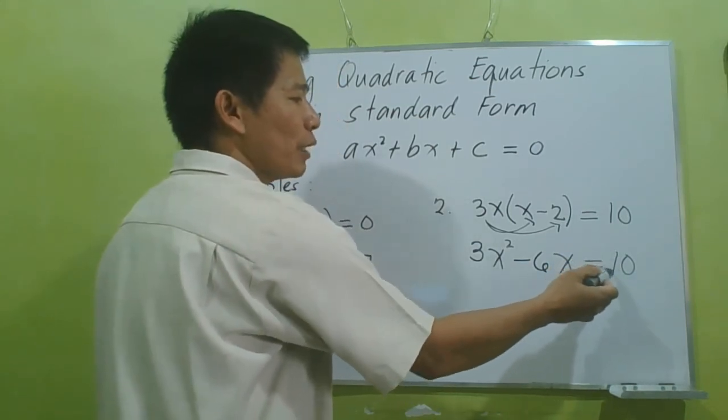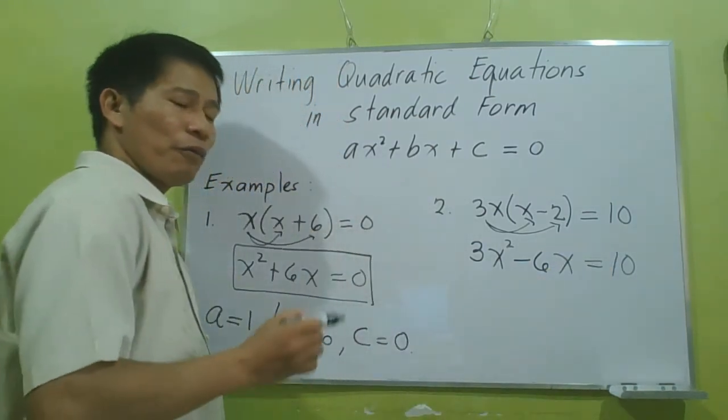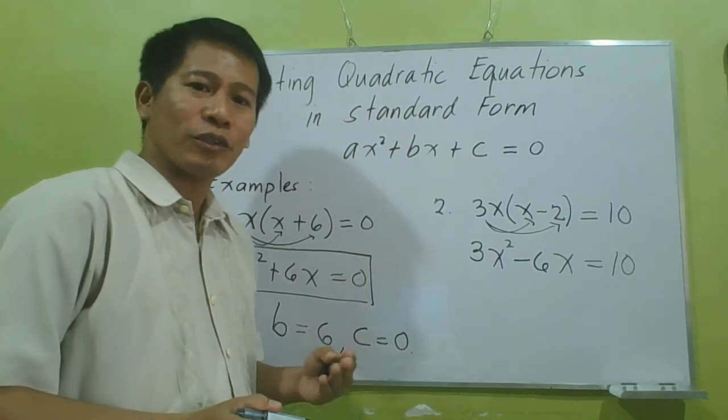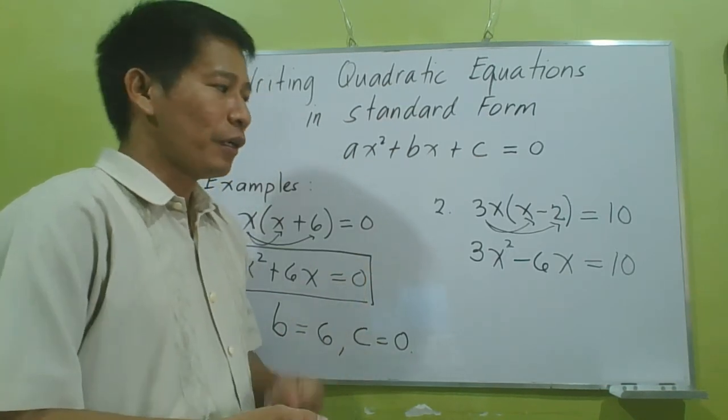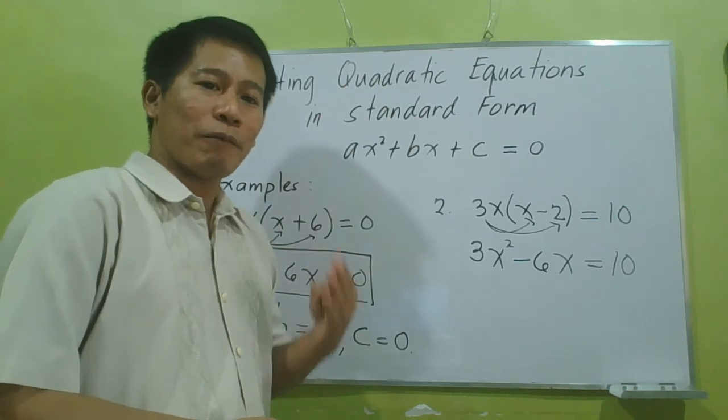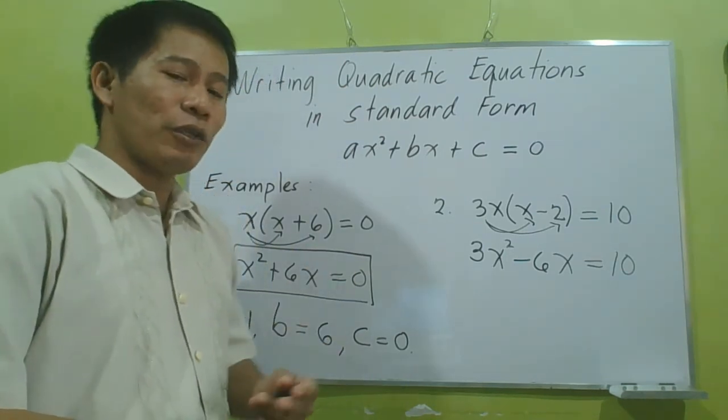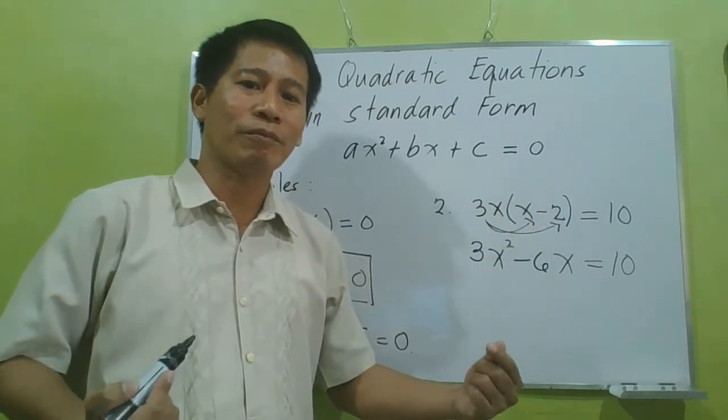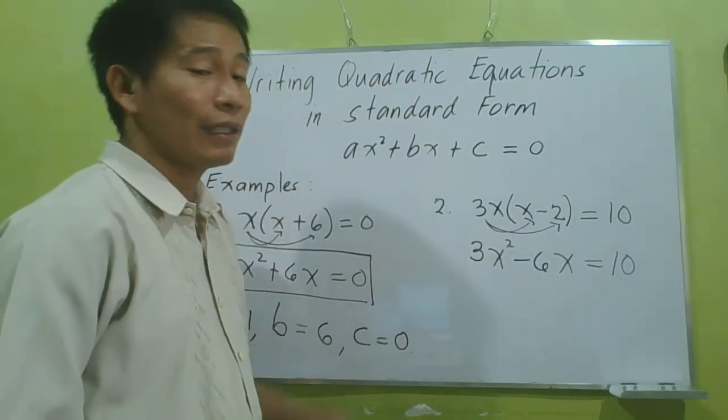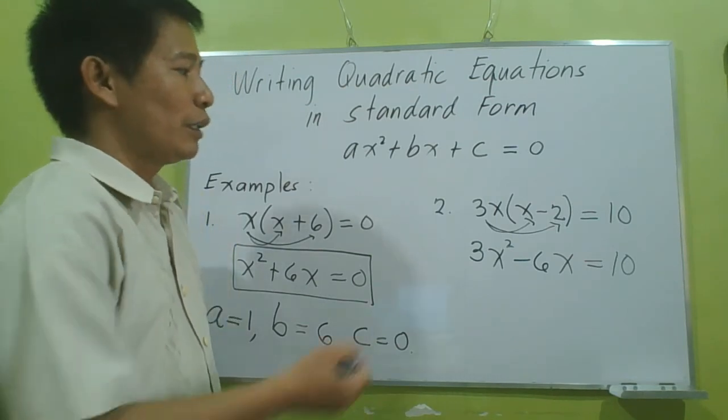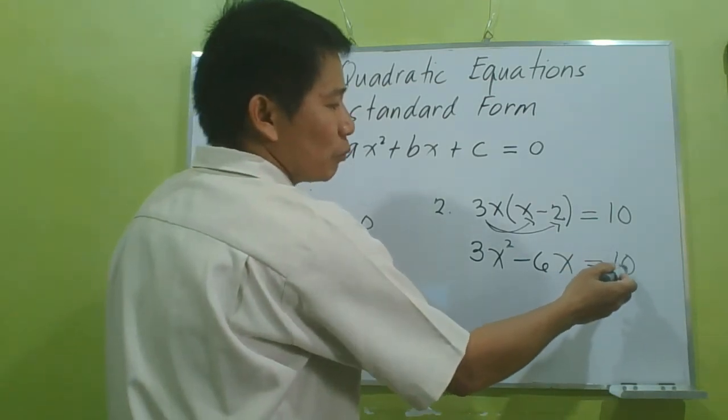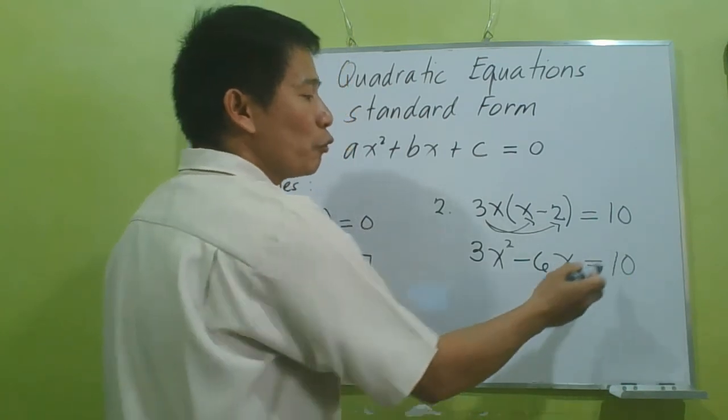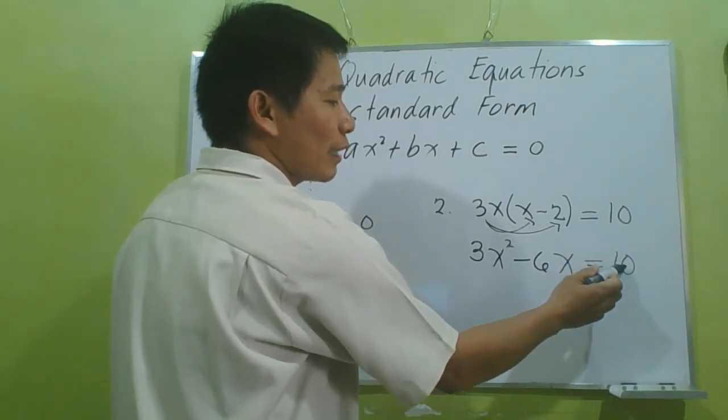How are we going to make the right side 0? We have what we call the addition property or subtraction property of equality. Remember, in that property, whatever you add or subtract from both sides of an equation, the equation remains the same. Since our objective is to make this 10 equal to 0, all we need to do is subtract 10.